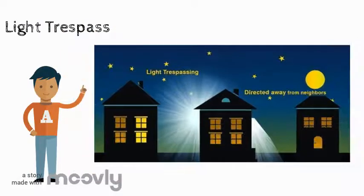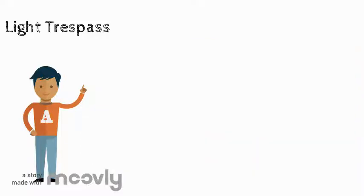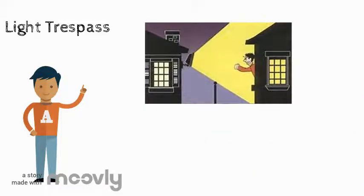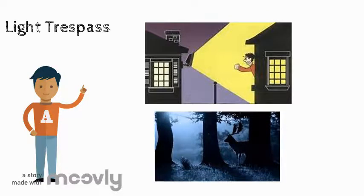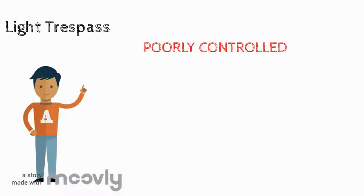Light trespass is when artificial light spills out of their intended area and shines into unwanted places. These include the neighbours' homes and sometimes the habitat of animals. These lights are poorly controlled and can disrupt our sleeping patterns.